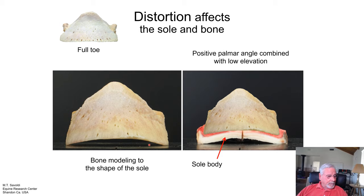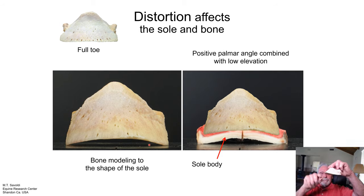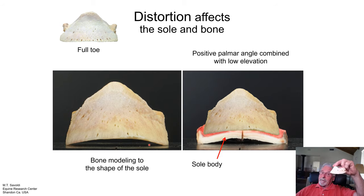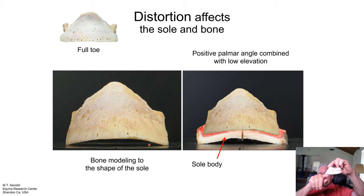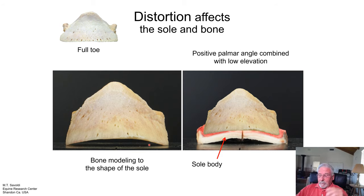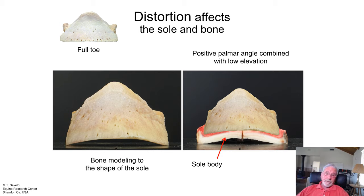There are two ways the bone can demineralize. I showed you the bone moving and getting this upward bend — that's because of this plane. Positive palmar angles will cause this area to demineralize. Narrow, straight sidewalls causing the arch to go inward can demineralize the bone in that direction. In some cases, you can have both occurring to the P3 bone.